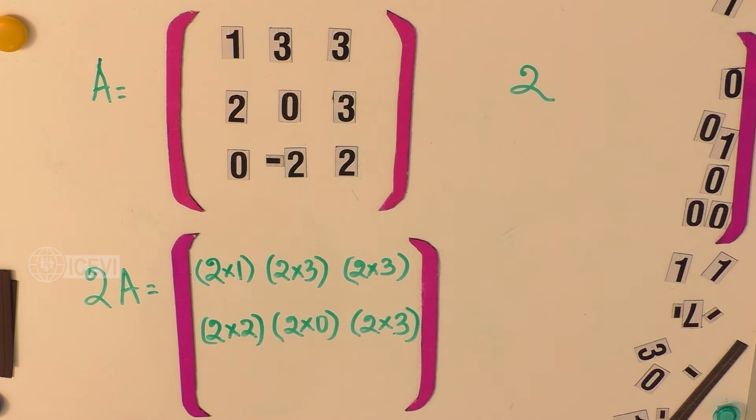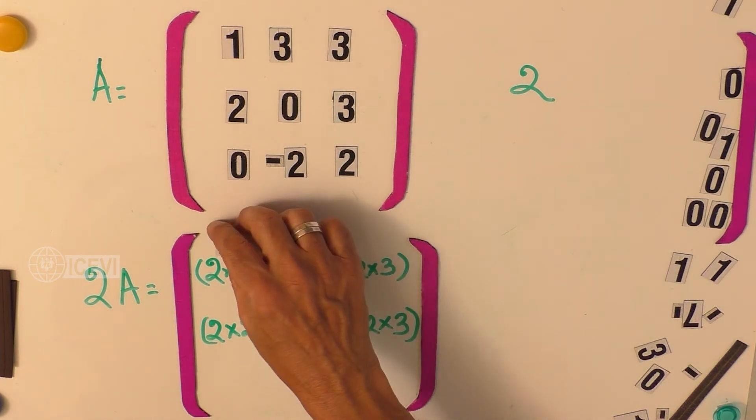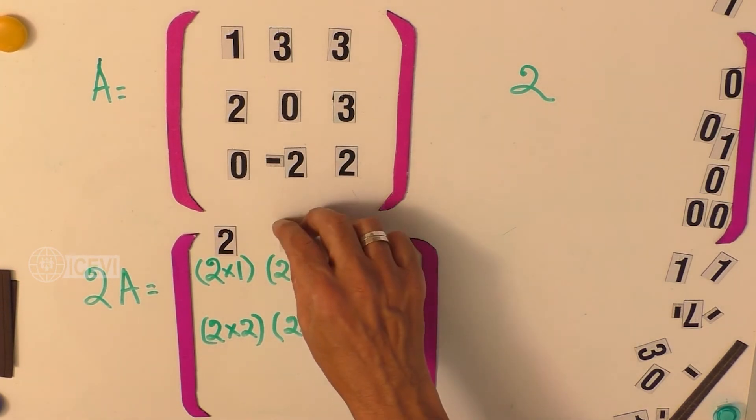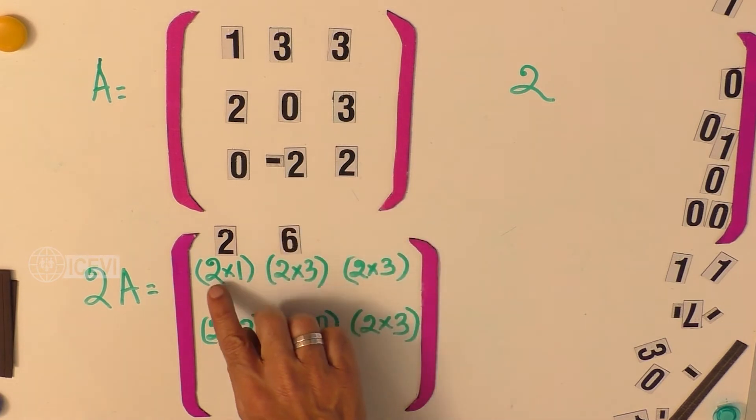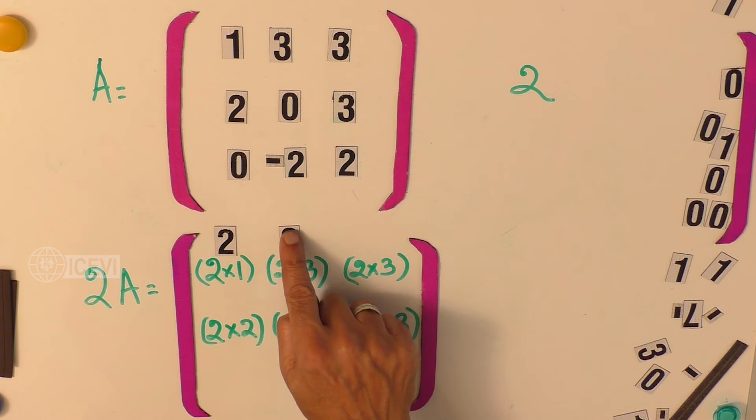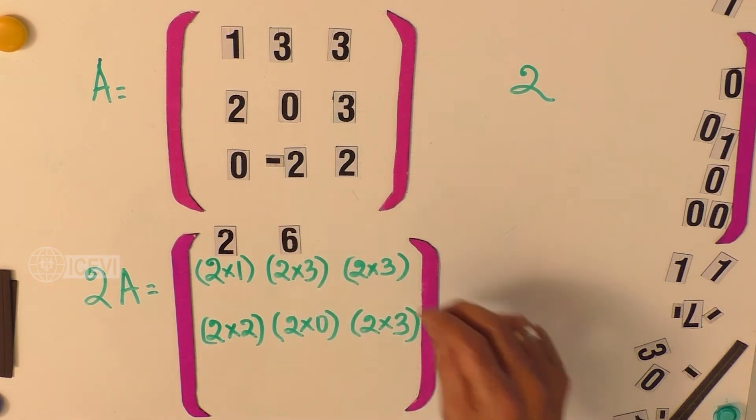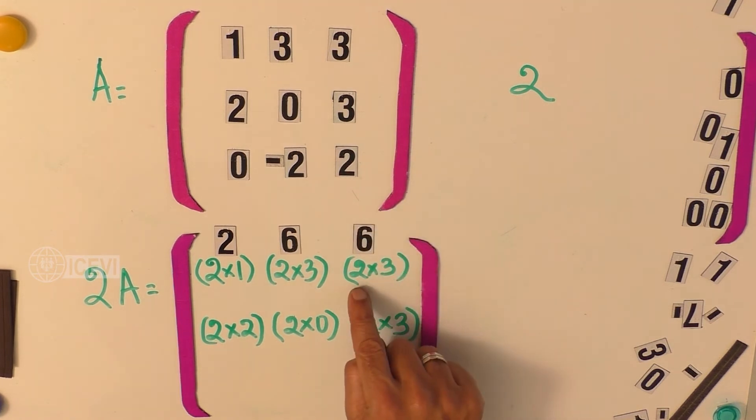What happens? Let us go to the first row. The first element is 2 multiplied by 1, that is 2. The second element is 2 multiplied by 3, that is 6. The third element is 2 multiplied by 3, that is 6.